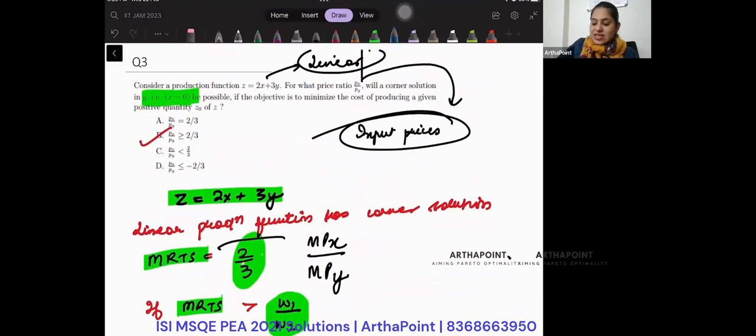So this is exactly like substitute goods. We have done this many times now. Compare MRTS with the input prices and check the input you want to use. One more thing.